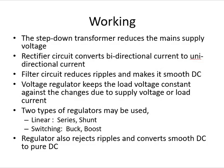To summarize the power supply: the step-down transformer reduces the mains supply voltage; the rectifier converts bidirectional current to unidirectional current; the filter circuit reduces ripples and makes it smooth DC; and the voltage regulator keeps the load voltage constant against changes in supply voltage or load current. Two types of regulators may be used: a linear regulator or a switching regulator. The regulator rejects ripples and converts smooth DC to pure DC. Other types of power supplies include single polarity variable output DC supply, dual polarity fixed output DC power supply, and dual polarity variable output DC power supply.